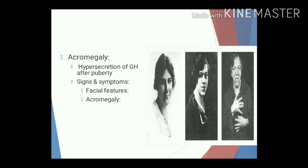Another disorder due to hypersecretion of growth hormone is acromegaly. This is the clinical condition that occurs due to excessive growth hormone secretion in adults — that is, after epiphysial closure of the long bones. This causes excessive growth in those areas where cartilage persists. Since the epiphysis has fused with the diaphysis, height cannot be increased.